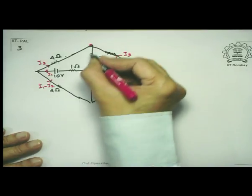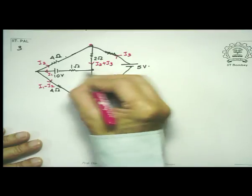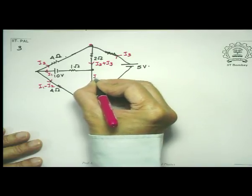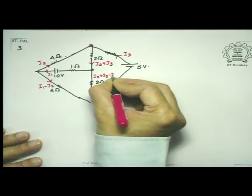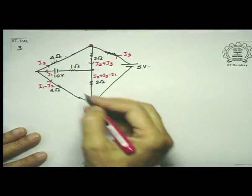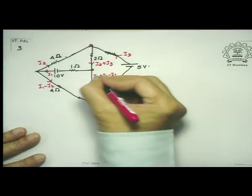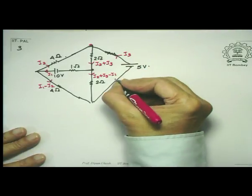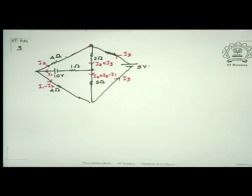At the junction, I2 plus I3 comes in and I1 goes out, so algebraically the sum is still zero, and the remaining current is also I3. I have three unknowns — I1, I2, and I3 — so I require three loop equations, having already exhausted the junction equations.